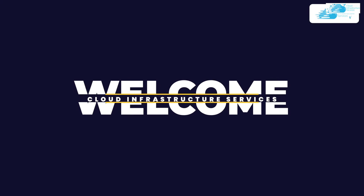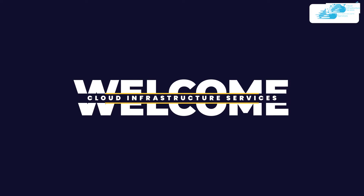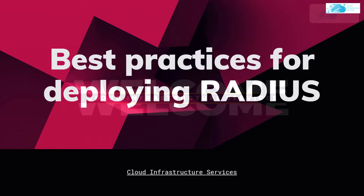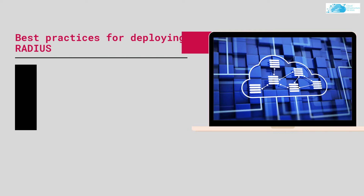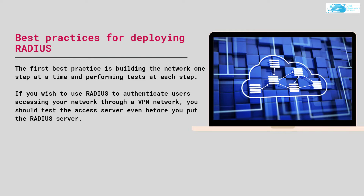Welcome to the Cloud Infrastructure Services YouTube channel. In this video we are going to talk about the best practices for deploying a RADIUS server. Starting off with the first best practice: build the network one step at a time and perform tests at each step. If you wish to use RADIUS to authenticate users accessing your network through a VPN, you should test the access service even before you put on the RADIUS server.